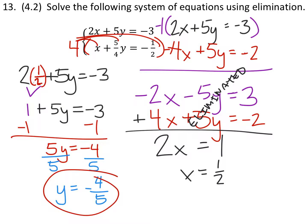So here's one of our answers, and here's the second part. We can write this as a coordinate pair if we choose, which I will do up here. I have 1 half and negative 4 fifths.